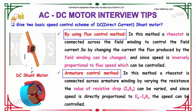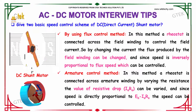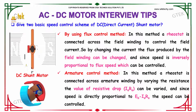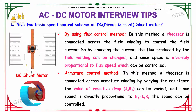By using the flux control method, a rheostat is connected across the field winding to control the field current. By changing the current, the flux produced by the field winding can be changed, and since the speed is inversely proportional to the flux, speed can be controlled.